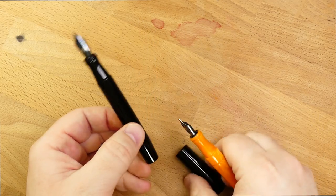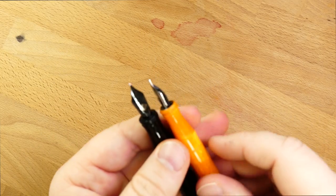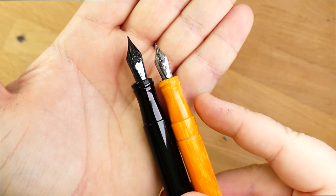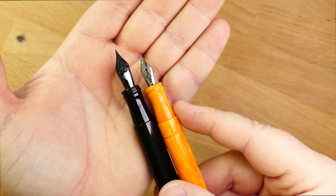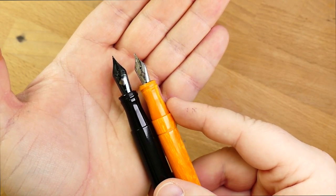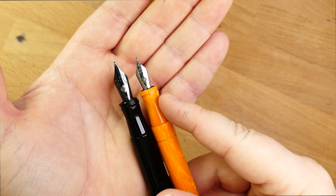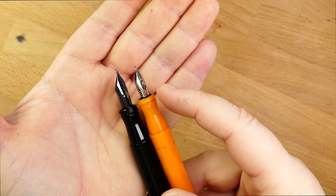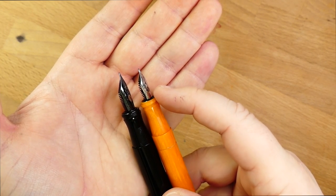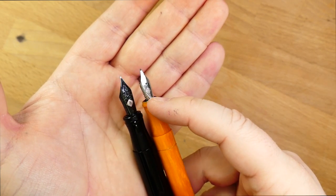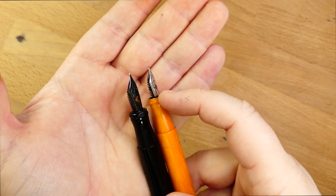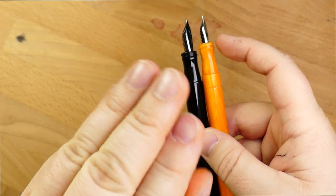And then you can really see the difference between number five and number six nibs. In case you're not sure what I mean by number five and number six nibs, here is that primer. The number five nib on this orange pen right here is just a smaller nib.